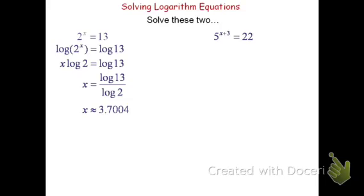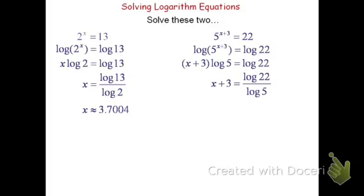For 5 to the (x plus 3) equals 22: take the log of both sides. The exponent is x plus 3, so using the power rule: (x plus 3) times log of 5 equals log of 22. Divide both sides by log of 5, then subtract 3: x equals log of 22 divided by log of 5, minus 3. Using a calculator — log of 22, close parenthesis, divided by log of 5, enter, then minus 3 — gives x approximately equal to negative 1.0794.